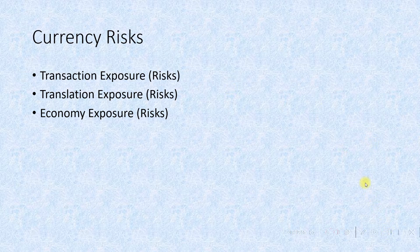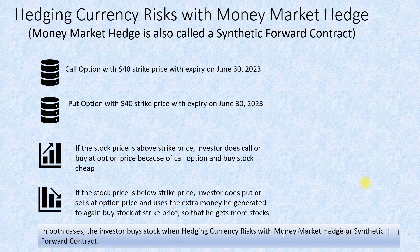Money market hedge is used to hedge the risk associated with currency risk in transaction exposure. This method is also called a synthetic forward contract. It uses a combination of a call option and a put option at the same strike price — both at the same time to expiry — to create an offsetting position in the event there is a currency or exchange risk.